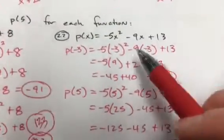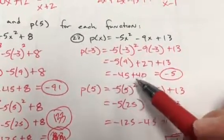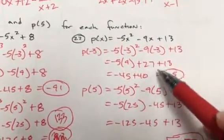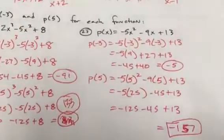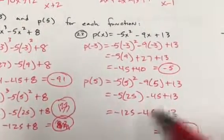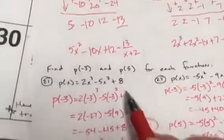Same thing here — plug negative 3 in for x, let's make sure the work is correct, that looks good. Plug 5 in for x and that gives us negative 157. Just plugging in and evaluating — as long as you write this first step showing me what you're typing in your calculator, you can get that answer.